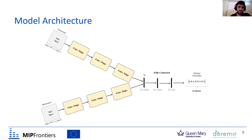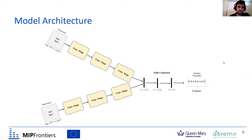Here is how the model looks when we have the separated tracks. We separate the audio into transients and stationary using the median filtering technique, and use essentially the same convolutional model for each branch, then concatenate the outputs and use the same fully connected layers to make the classification.